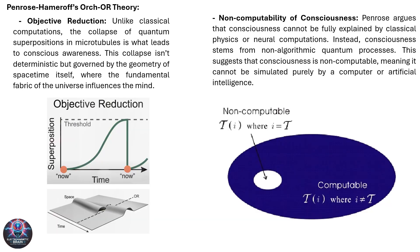The key to electromagnetic consciousness in Orch-OR theory is the maintenance of quantum coherence within microtubules. As depicted here, microtubules preserve quantum states even in the brain's warm environment, suggesting that the brain might have evolved specific structures to protect these delicate quantum processes. This protection could enable the transmission of quantum information through electromagnetic fields, crucial for the emergence of conscious states. The collapse of these quantum states generates unique electromagnetic patterns, which may correspond to different conscious experiences, theoretically creating an electromagnetic field that integrates neural activities and supports a coherent field of consciousness.